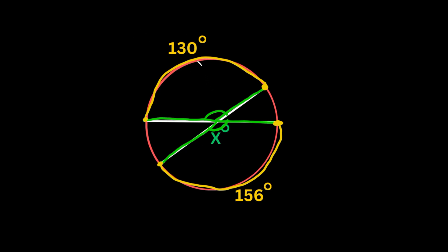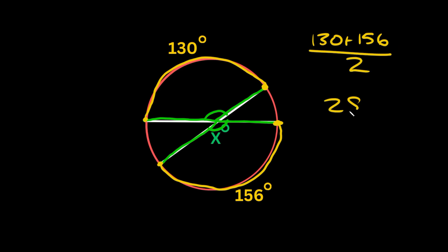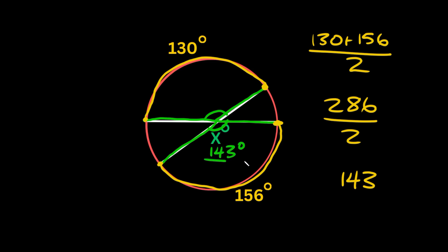To find the average of these two numbers we just add them up and divide by two. So 130 plus 156 divided by two: that's 286 divided by two, which equals 143. So this angle right here is 143 degrees.